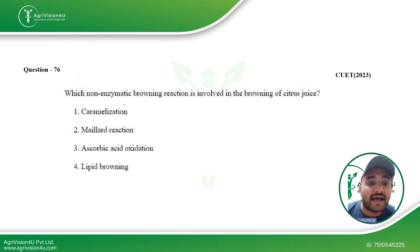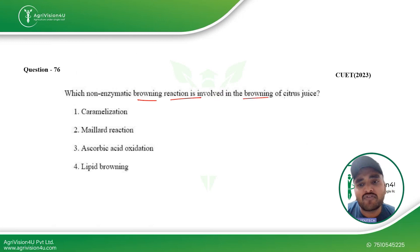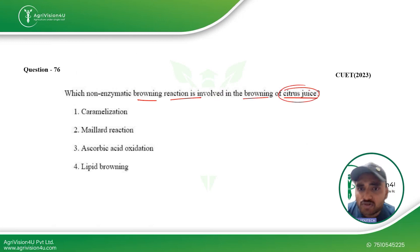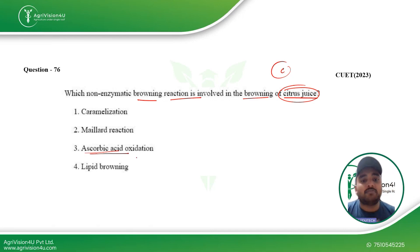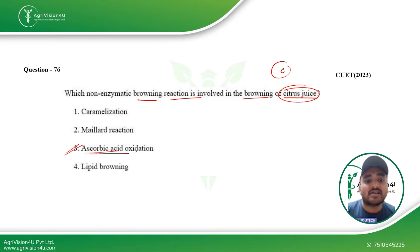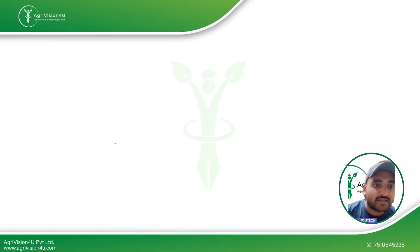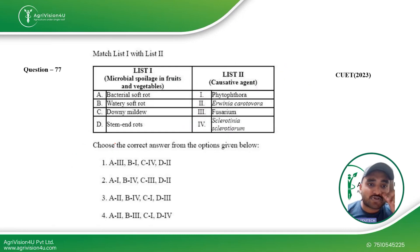The next question asks which enzymatic browning reaction is involved in the browning of citrus juice. Since citrus fruits contain Vitamin C, also known as ascorbic acid, the answer is ascorbic acid oxidation.